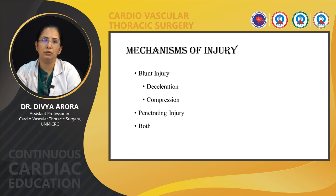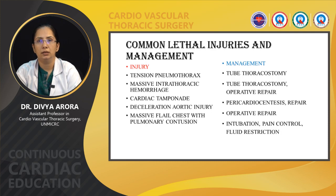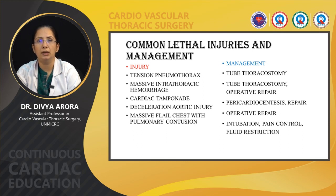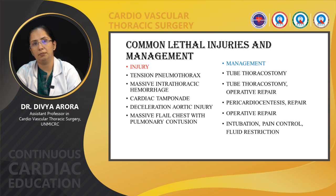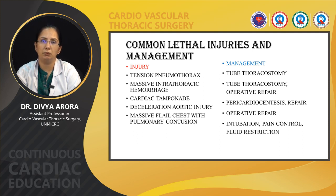The mechanism of injury could be deceleration, compression, penetrating, or both. The most commonly lethal injuries are tension pneumothorax, requiring tube thoracostomy; massive intrathoracic hemorrhage, needing tube thoracostomy or operative repair; cardiac tamponade, requiring pericardiocentesis and repair; deceleration aortic injury requiring operative repair; and massive flail chest with pulmonary contusion, managed with intubation, pain management, and fluid resuscitation.